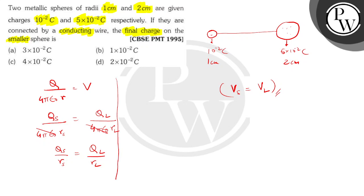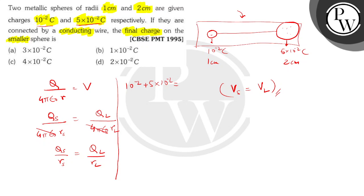The initial charges were 10 power minus 2 coulombs and 5 into 10 power minus 2 coulombs. Since there is no external source of charge, this is an isolated system. So the total initial charge, 10 power minus 2 plus 5 into 10 power minus 2, equals the final charge q_small plus q_large.